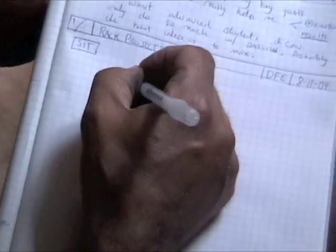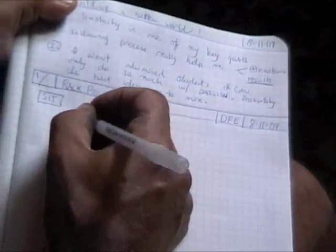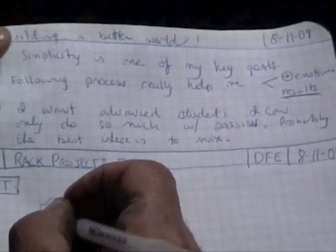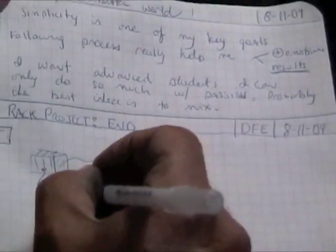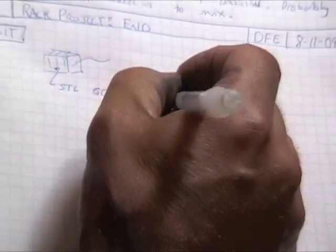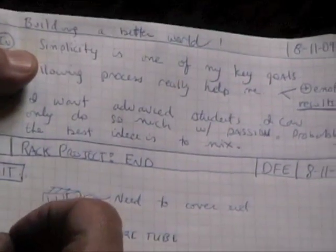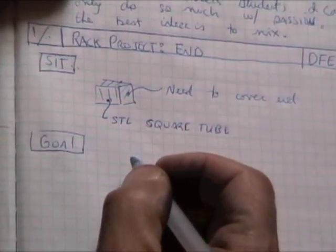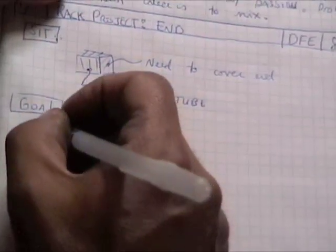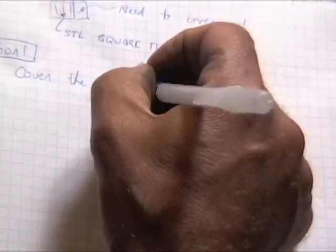In the next section I'm going to make a little sketch. I've got steel square tube and I need to cover an end. My goal for this task — I could put down 'weld a plate on the end' because that's my original idea, but a better goal is 'cover the end so it's water tight.'